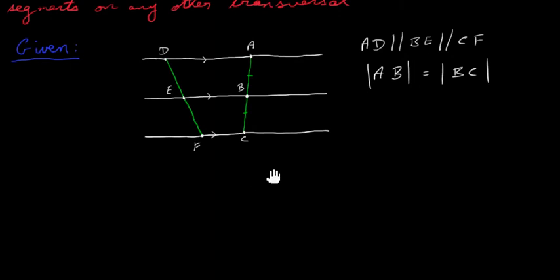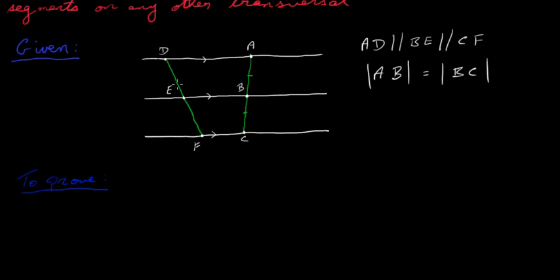What we need to prove is that DE — the distance from D to E — is equal to EF. So we'll write that out: DE is equal to EF.